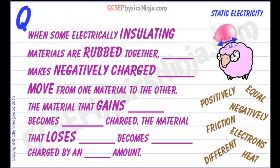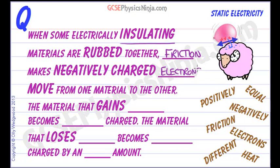Now it could be that it's the opposite way around — it could be that the electrons move from the Sheep to the balloon — but the principle is the same. So let's take a look at this flashcard. When some electrically insulating materials — and that means that the electrons find it difficult to move freely through the material — when they're rubbed together, friction makes negatively charged electrons move from one material to the other.